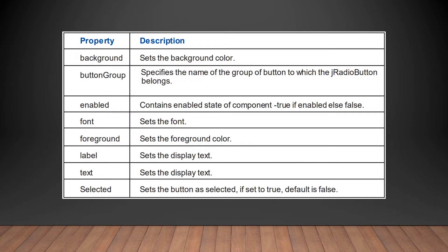Let us discuss the properties of JRadioButton. The background property sets the background color. Button Group is a new property — it specifies the name of the group of buttons to which the JRadioButton belongs. As discussed, radio buttons belong to a group, and the buttonGroup property specifies the name of that group. Other properties include enabled, font, foreground, and label text, which we have already discussed.